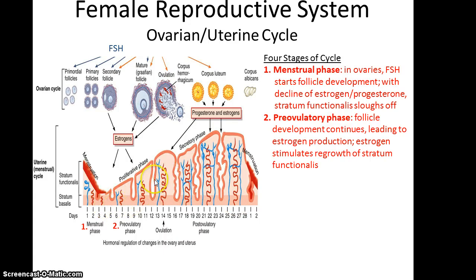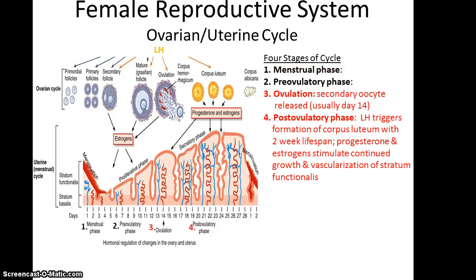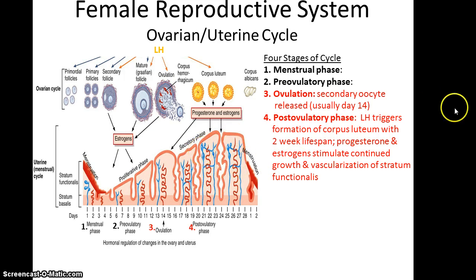After a couple days, you get to the pre-ovulatory phase, during which the follicle continues to develop, leading to estrogen production by the ovary. This estrogen stimulates the regrowth of the stratum functionalis within the uterus. Then the ovulation event is triggered by higher concentrations of luteinizing hormone, forming the corpus luteum from the remains of the mature follicle. The corpus luteum then produces progesterone and other estrogens, which maintain the fully formed stratum functionalis. The corpus luteum usually lasts about two weeks.